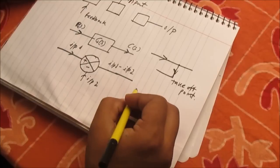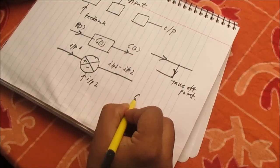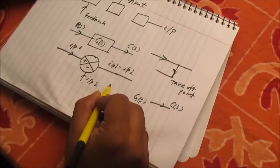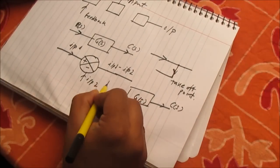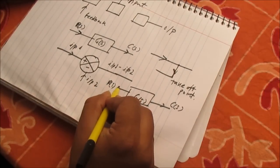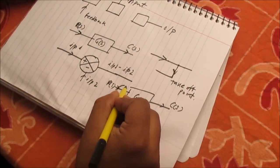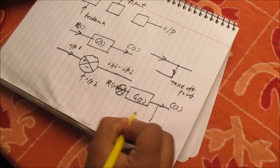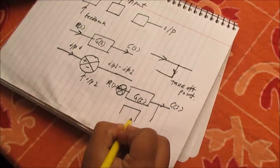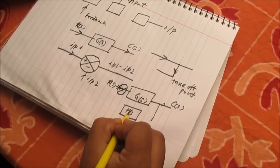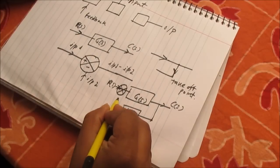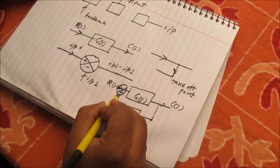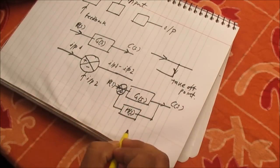In a feedback system, we have GS with CS as output and RS as input to the summing amplifier. The feedback signal HS goes back to the summing amplifier. If the feedback is negative, it is a negative feedback system; if positive, it is a positive feedback system.